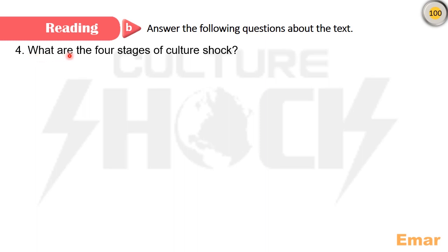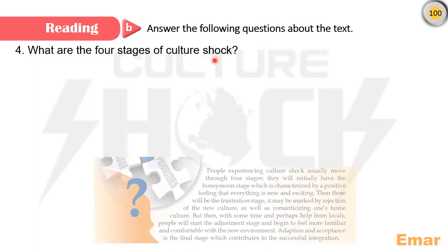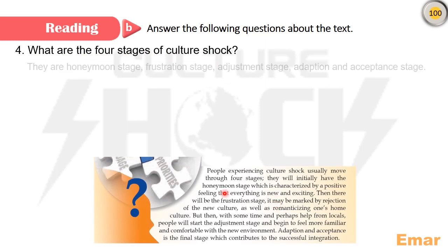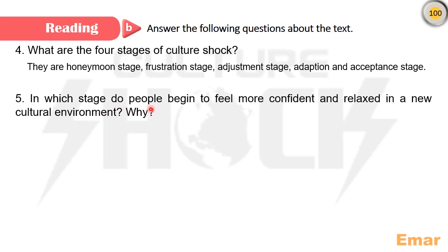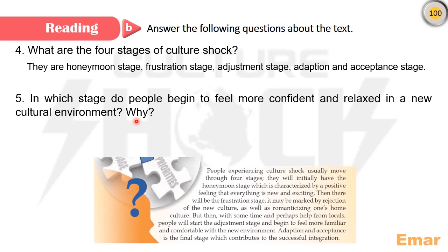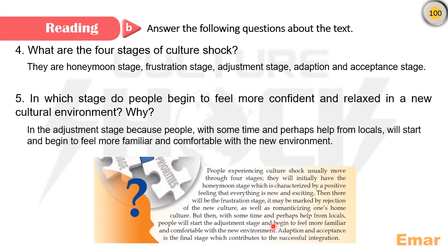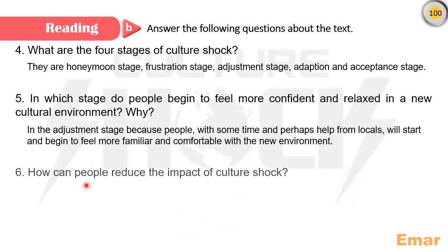What are the four stages of culture shock? They are the honeymoon stage, frustration stage, adjustment stage, and adaptation and acceptance stage. In which stage do people begin to feel more confident and relaxed in a new cultural environment and why? In the adjustment stage, because people with some time and perhaps help from the locals will start and begin to feel more familiar and comfortable with the new environment.